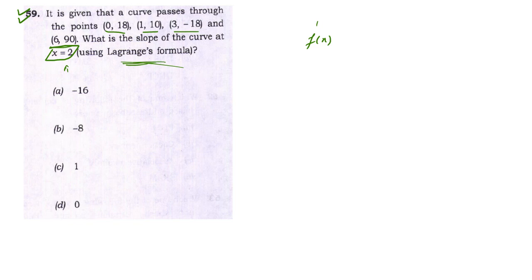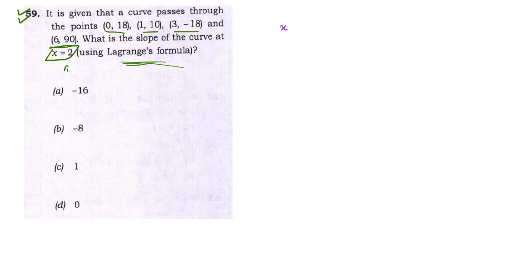First let us set up the table. We have x values: 0, 1, 3, and 6. Corresponding y values are: 18, 10, -18, and 90. These are the columns we will use.